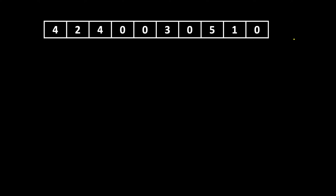You have to use constant space O(1), and time should be linear. The approach we are following is: we start from the beginning with a pointer to a zero element (z) and a pointer to a non-zero element (n). When we see there is a non-zero element to the right of a zero element, we can swap them so the zero goes after the non-zero.